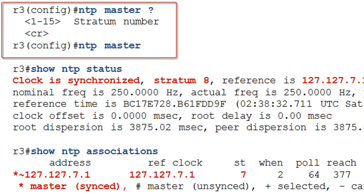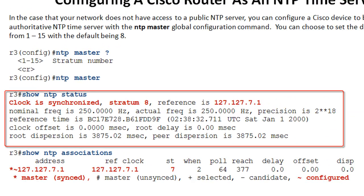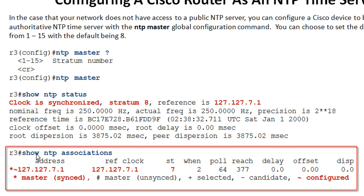When you type `ntp master` you can set a stratum number. If you just hit Enter it uses the default stratum of eight — I'd suggest doing that. Don't set it to stratum one or two, because if you later get public NTP servers they may prefer this device over more accurate sources. When you check the status, it uses stratum eight, and in the NTP association it associates to itself via a 127 address.